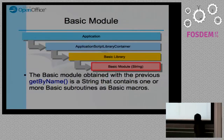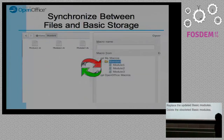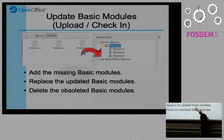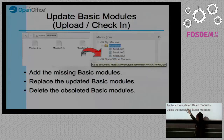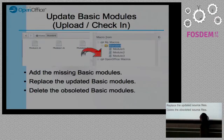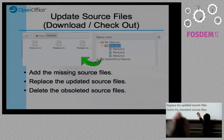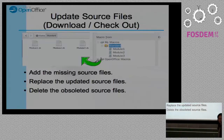Each Basic library is also an XNameAccess container, so I can use getByName, replaceByName, insertByName, and removeByName to manage the modules inside. The module obtained with getByName is actually just a plain text string containing all the macro subroutines. The sync logic is actually very simple: synchronize between files and the Basic storage — add missing modules, replace updated macros, and delete obsolete modules.